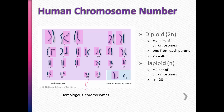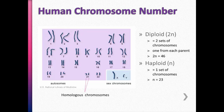One chromosome is pulled at random from each pair, and those are the ones that go into one sperm or egg, while the others go into a different sperm or egg. That is the process of meiosis.